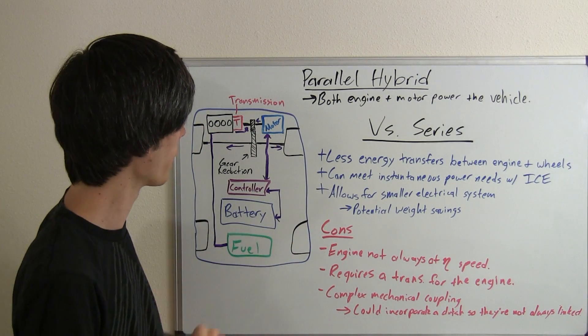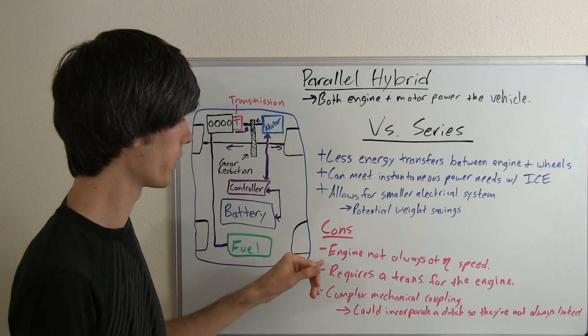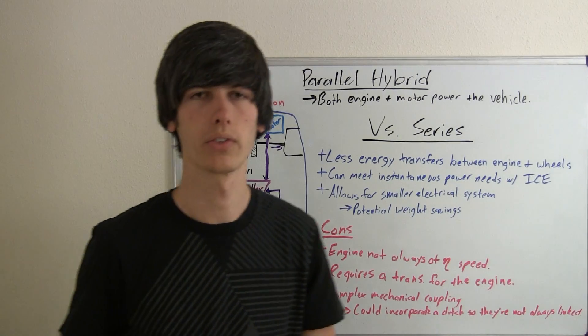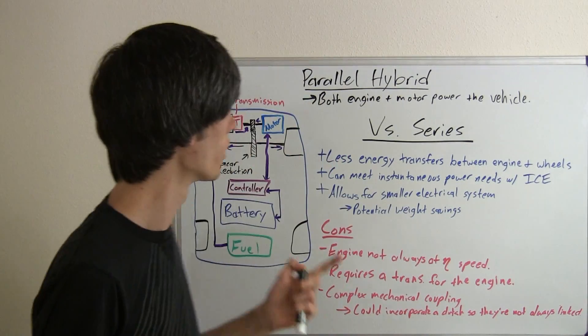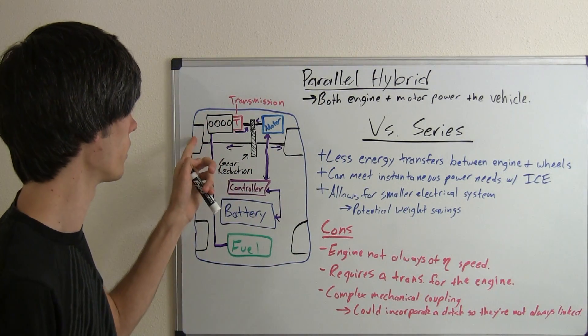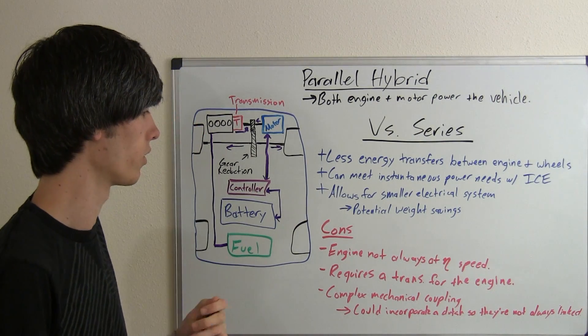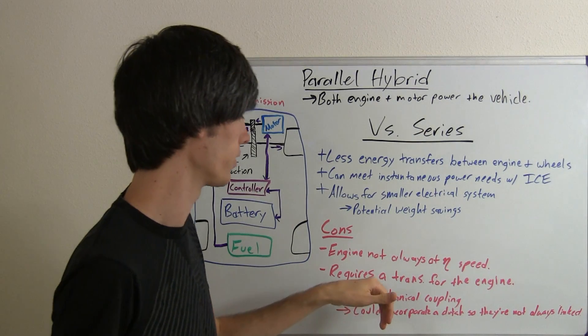Some reasons against the parallel hybrid: the engine is not always at its most efficient speed like it could be in a series. Because it has to rev up and meet the needs of the speeds you're going, it can rev to inefficient speeds.